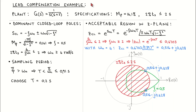The dynamics of the plant for this example are described by the analog transfer function shown here, which has a pole at the origin of the s-plane and at s equal to minus two. The specifications are that the step response of the closed loop control system should have an overshoot of 16.1% and a 2% settling time of less than or equal to two seconds. We will first translate the specifications to an acceptable region in the z-plane, then calculate the discrete equivalent plant model, and lastly design the controller using the digital root locus.